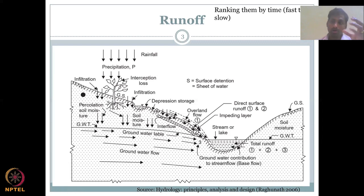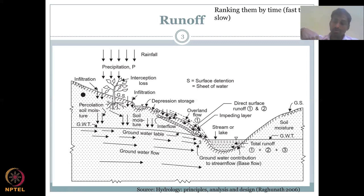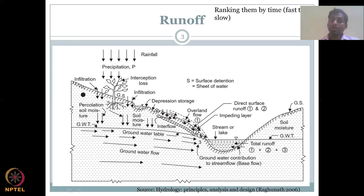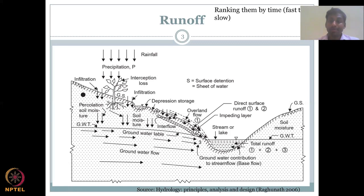Here we have direct surface runoff as component one — water that falls on the surface and because of the slope gradient comes down. The second component is where water infiltrates and then moves back to the surface because gravity drives it down, but resistance to flow causes it to come out — that is also called direct surface runoff. The part that is called subsurface runoff is when something impedes or obstructs the subsurface flow, causing the water to come back to the surface or into the lake.